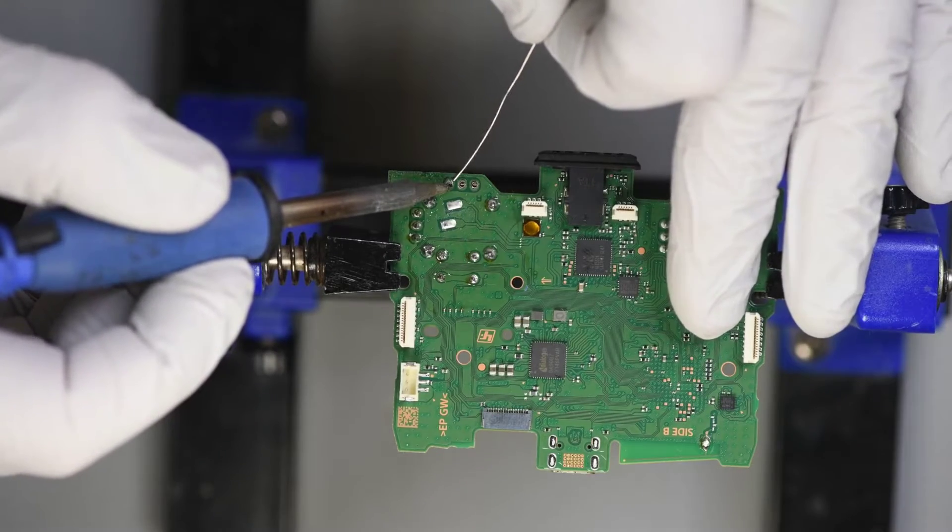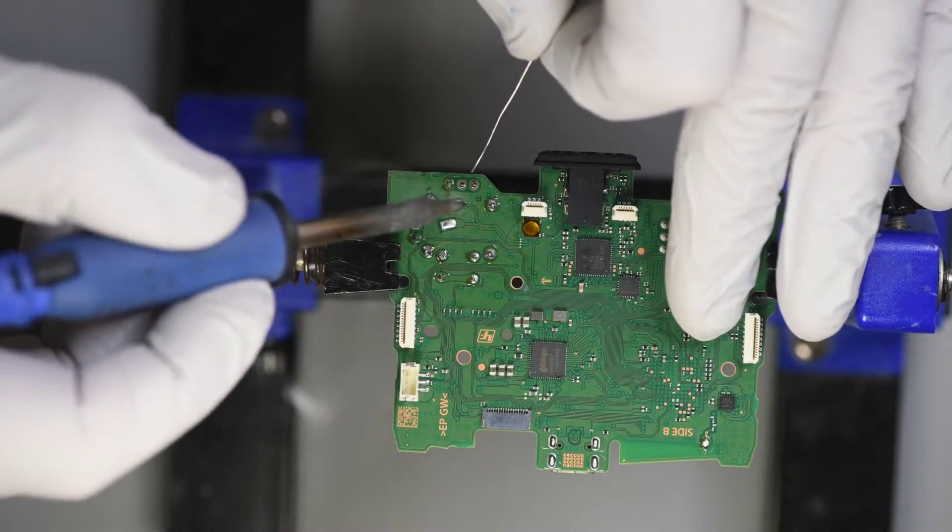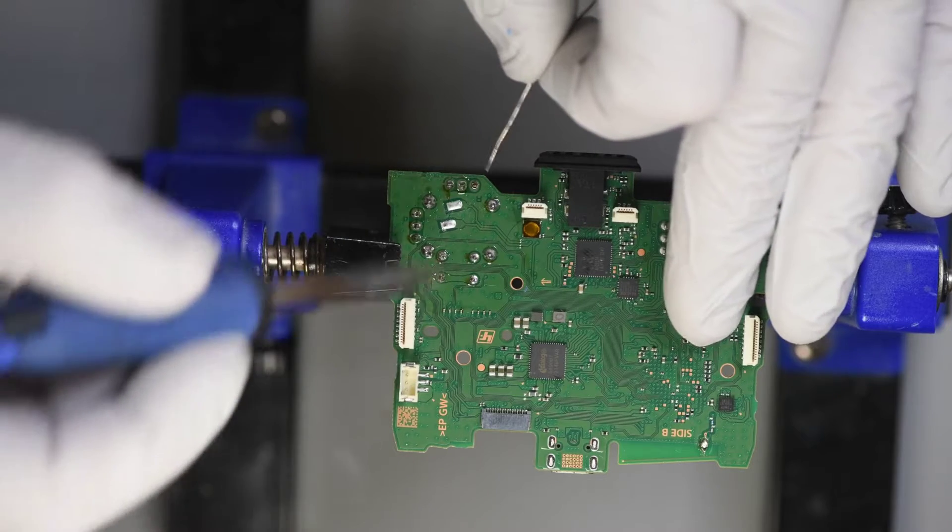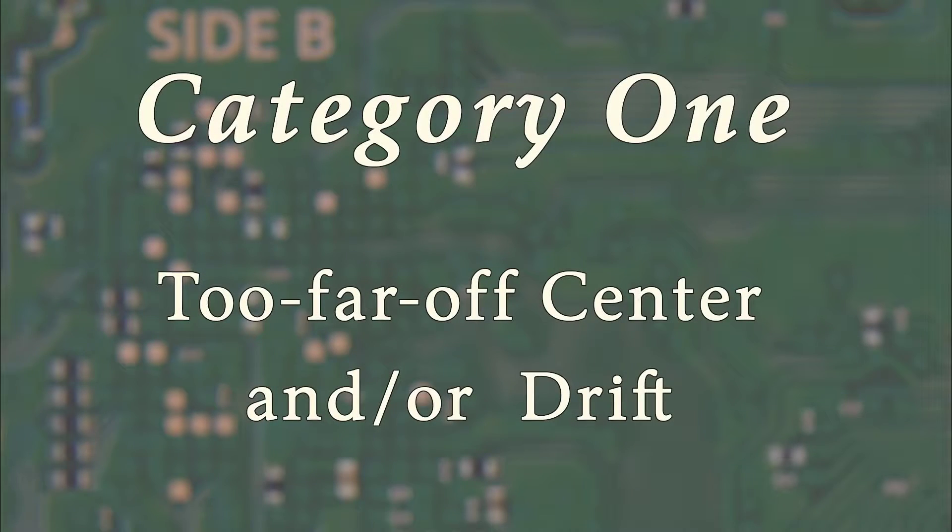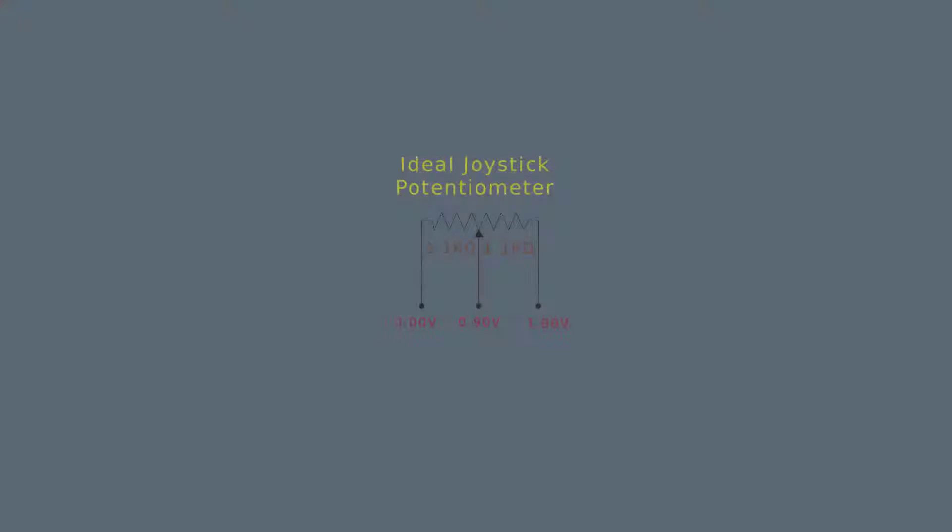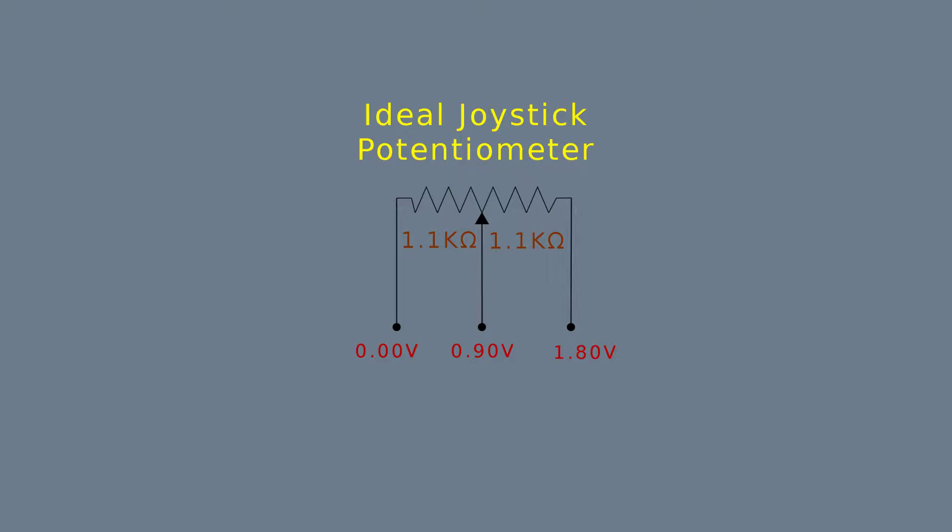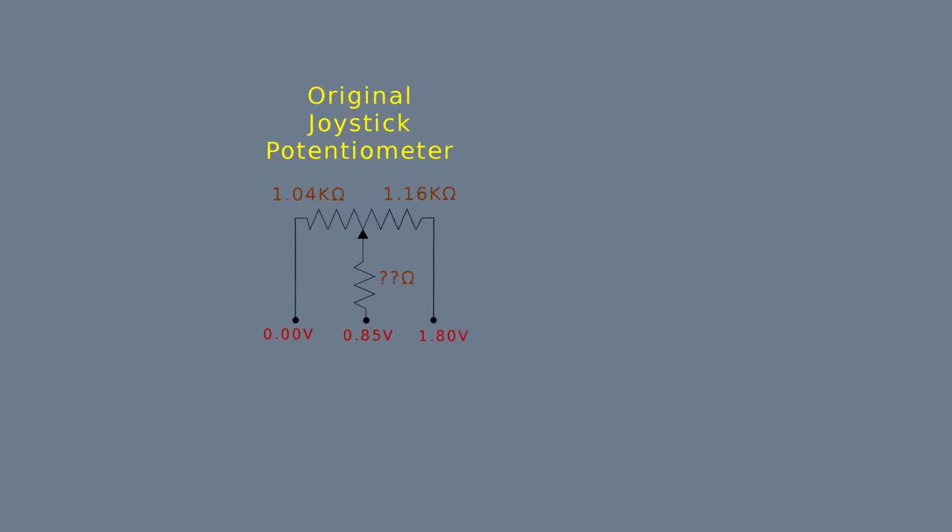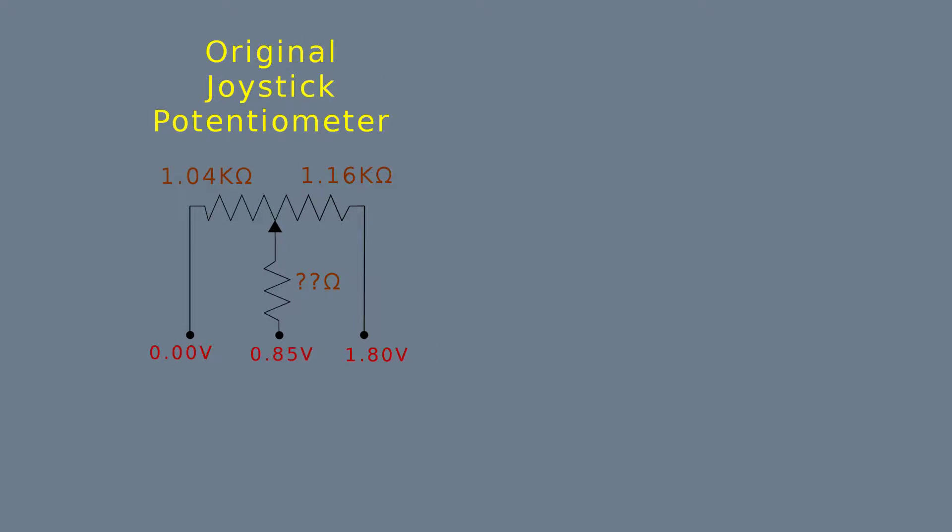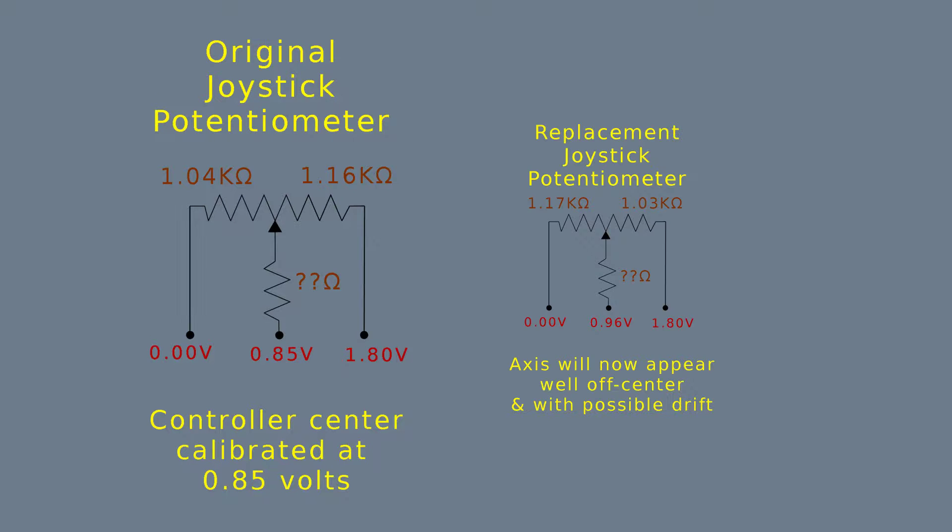Problems that arise after replacing the joystick module or just the potentiometers, I'm going to separate into two categories. The first category I'm not really going to deal with in this video, the problem of the joystick still drifting, either the same axis or a different axis. While a problem, it is not something that was likely caused by the replacement procedure. It's more than likely that one of the potentiometers is just too far off in value compared to the one it's replacing.